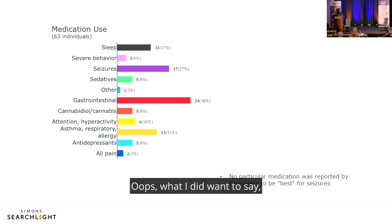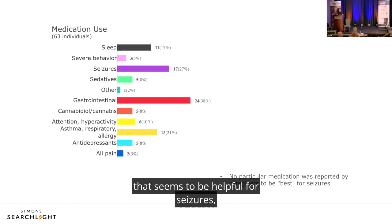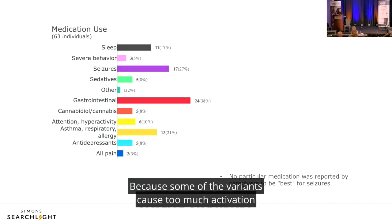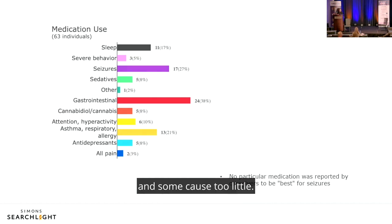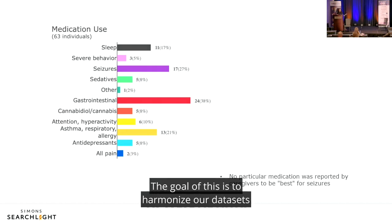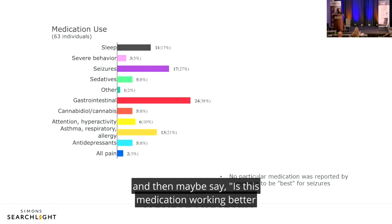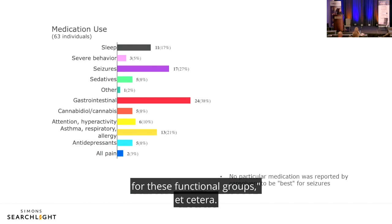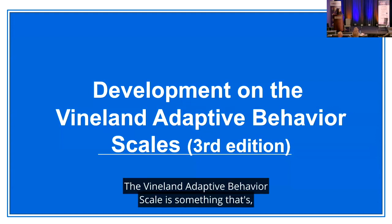Importantly, there is no particular medication that seems to be helpful for seizures across the board. We now understand why — some variants cause too much receptor activation and some cause too little, so one medication won't be universally effective. The goal is to harmonize data sets and then ask: is a particular medication working better for specific functional groups?